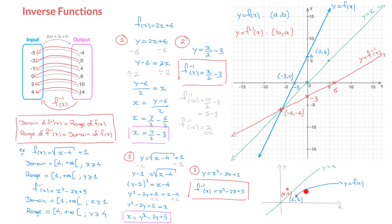Drawing this blue curve's mirror image across y = x, we get the graph of y = f⁻¹(x). Looking at this, we can confirm the domain and range. The x-coordinate of its starting point is 1 and the curve shoots to the right, confirming x ≥ 1. Its starting point has a y-coordinate of 4 and then shoots upwards infinitely, confirming the range y ≥ 4.